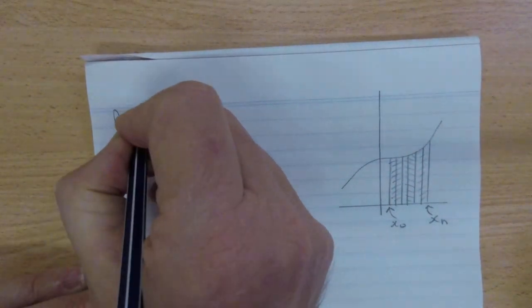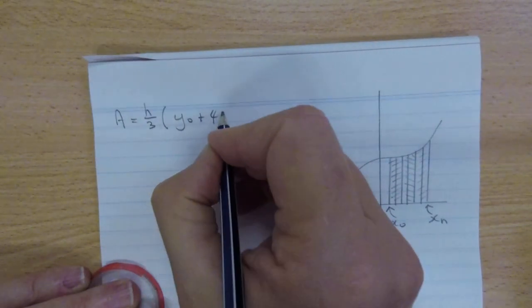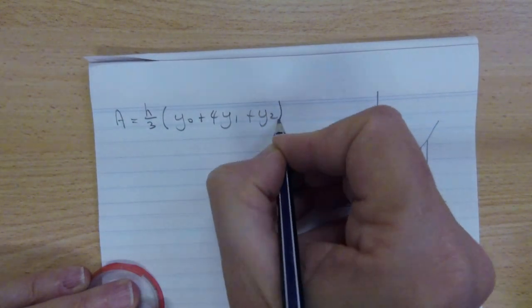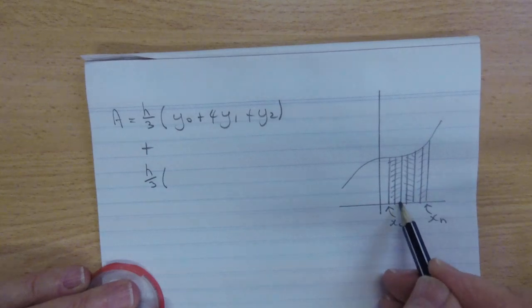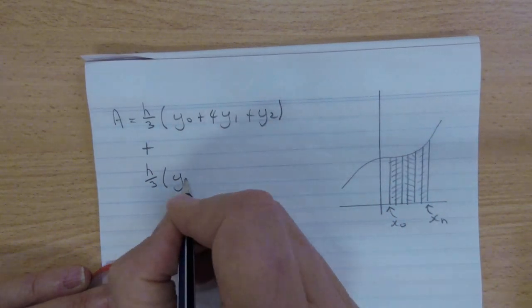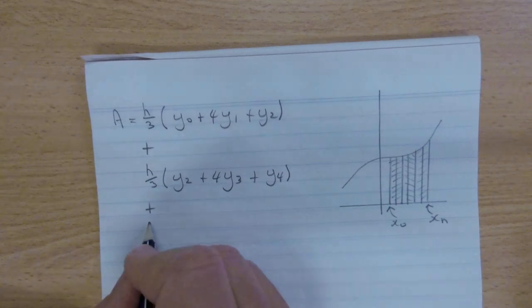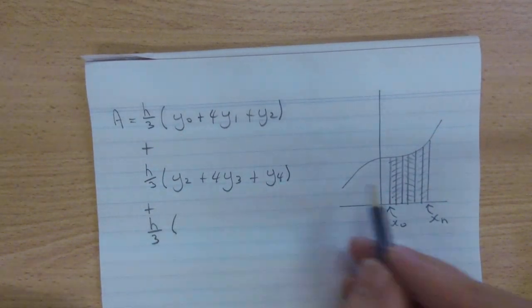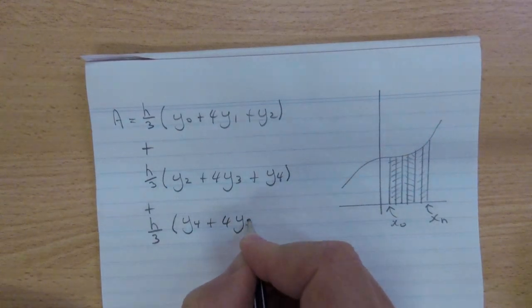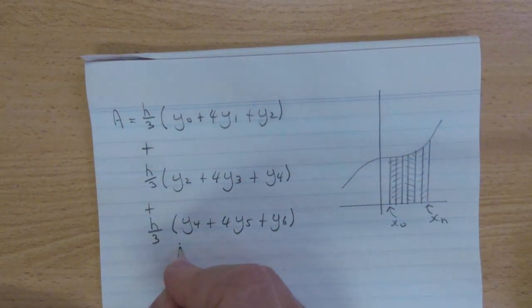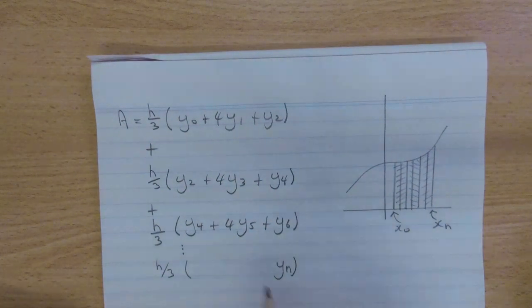Now, Simpson's rule said area equal to h over 3. Now, for the first three strips, we had y0 plus 4 times y1 plus y2. For the next three strips, I'd have h over 3. Now, the next strip begins with y2. And then I'd have 4 lots of y3, and then I'd add y4. So the next strip, just imagine I've got lots of them. The next strip would begin at point y4. So y4 plus 4 lots of y5 plus y6. And I'd keep on doing this all the way up until I finished with yn, the last one.